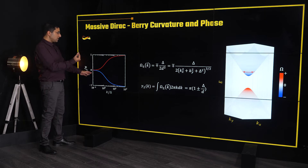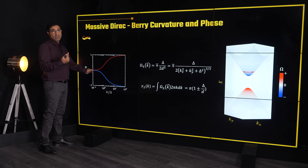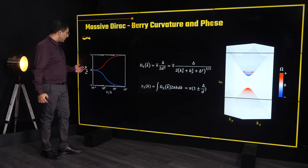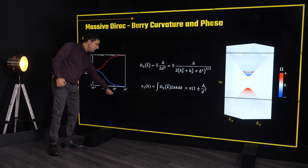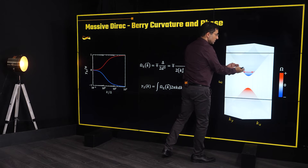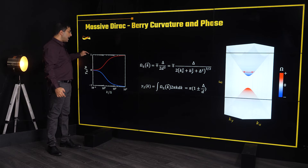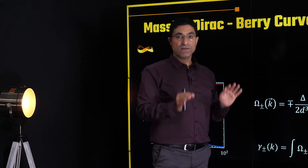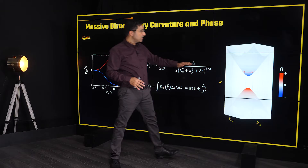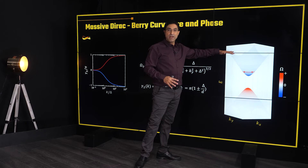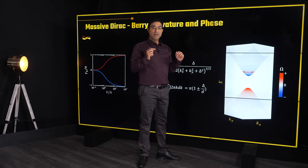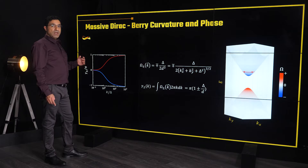If the radius we take is small, the Berry phase is zero — we're not encircling any Berry curvature. On the other hand, if we take a large radius — large compared to the scale of the effective mass — such that all the Berry curvature has decayed and we're encircling the entire thing, we converge to a constant value of either π or −π for the two bands. This is an important conclusion: for a massive Dirac point, if we look far enough away on the scale of the effective mass, the Dirac point has a Berry phase of π or −π.